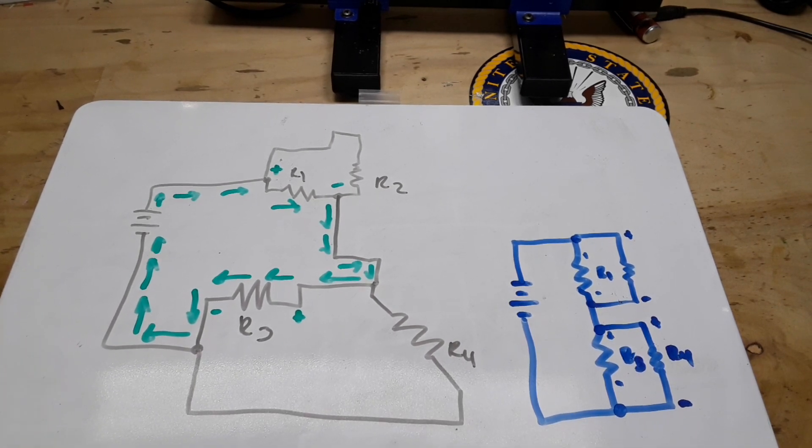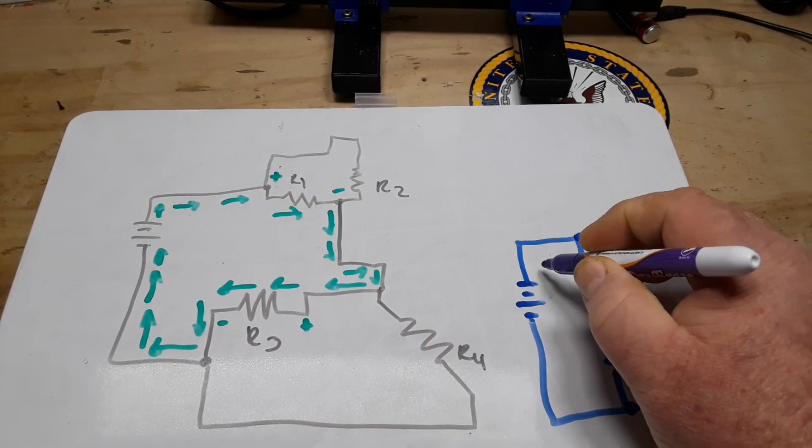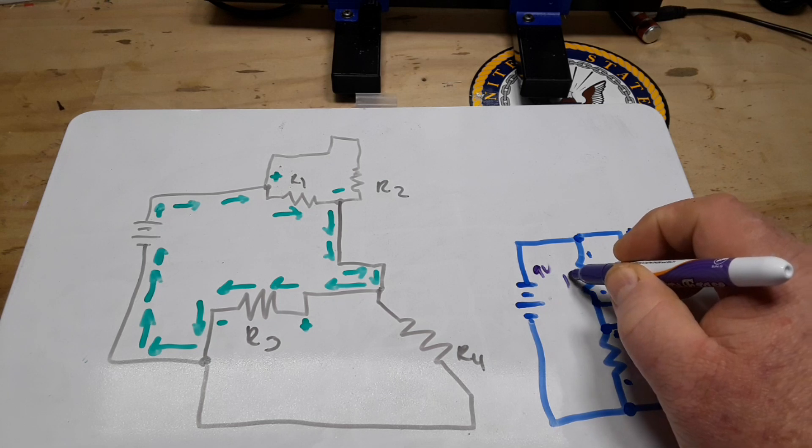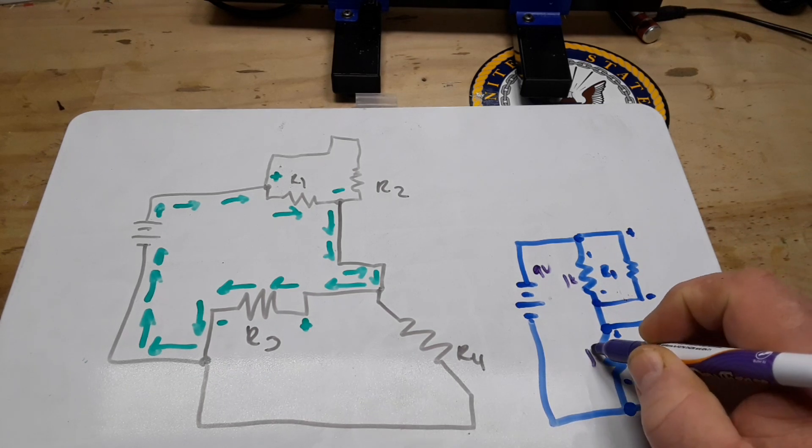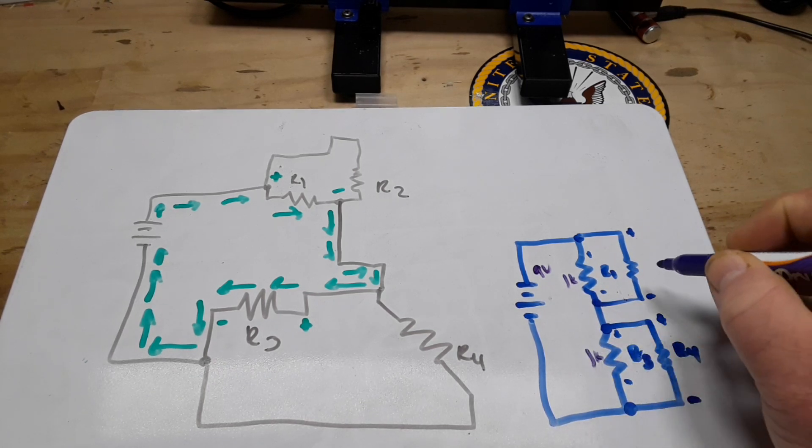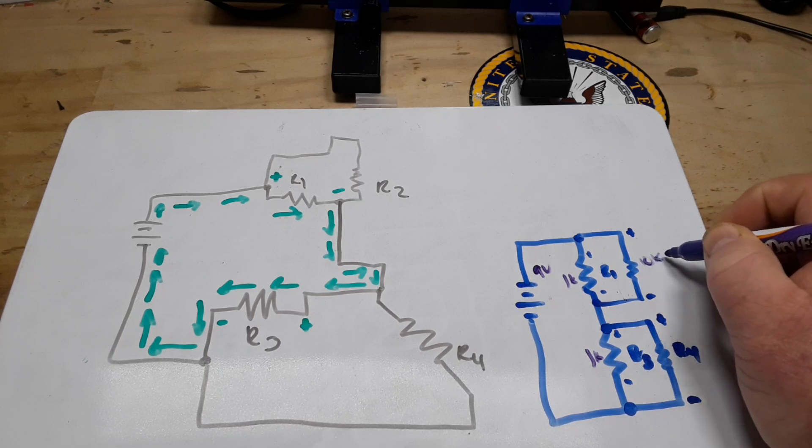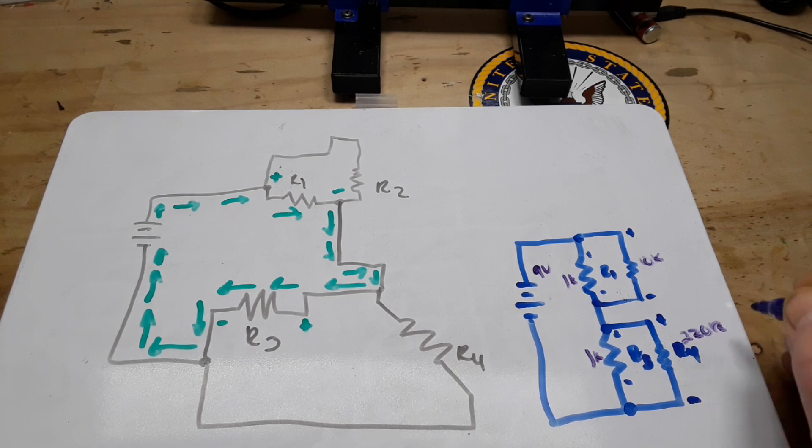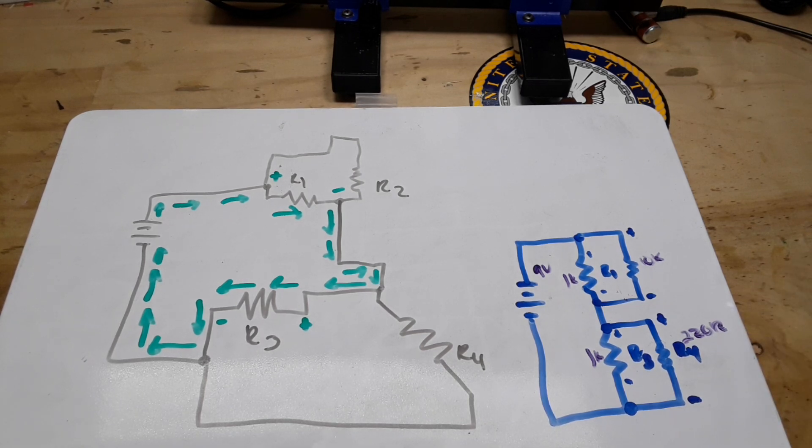And from here we can use Ohm's law, we can use Kirchhoff's law. You know, say we know the value of those resistors - say this is a 9 volt, this is 1k, 1k, 10k, and 220 ohms. Now we can solve that, super simple.